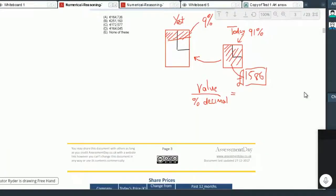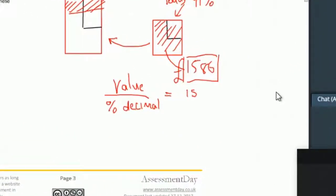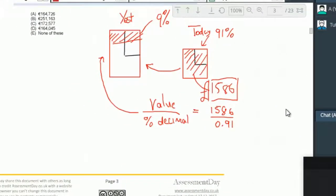So in our case, that cashes out as 1586 divided by the percentage decimal for today's percentage is 0.91. Because 91% is the same as 0.91. And then that will chuck you straight back to yesterday's price, which will be up here. So calculate that. You should have 1742 pounds 86. So let's write that in there.